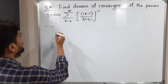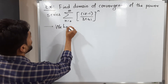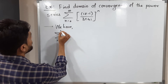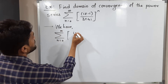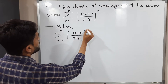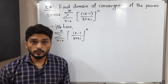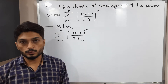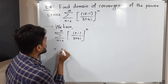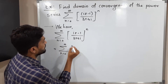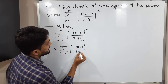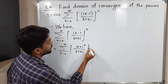So let me write the given power series. We have summation n running from 0 to infinity of (z minus 1) divided by (3 plus 4i), whole raised to n. We know that i squared is equal to minus 1, so let us replace this minus 1 by i squared. So this is equal to summation n running from 0 to infinity of (z plus i squared) divided by (3 plus 4i), whole raised to n.